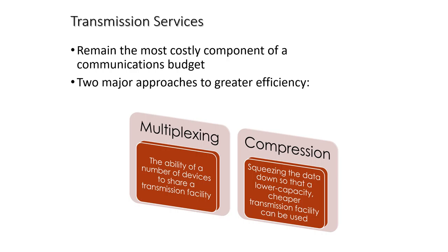Despite the growth in the capacity and the drop in cost of transmission facilities, transmission services remain the most costly component of a communications budget for most businesses. Multiplexing and compression are the two major approaches to greater efficiency. Multiplexing, also known as MUXing, is where multiple analog or digital signals are combined into one signal over a shared medium. Compression is reducing the data so that a lower capacity, cheaper transmission facility can be used to meet a given demand.